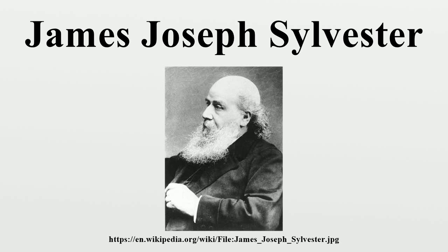In 1872, he finally received his BA and MA from Cambridge, having been denied the degrees due to him being a Jew. In 1876, Sylvester again crossed the Atlantic Ocean to become the inaugural professor of mathematics at the new Johns Hopkins University in Baltimore, Maryland. His salary was $5,000, which he demanded be paid in gold. After negotiation, agreement was reached on a salary that was not paid in gold.